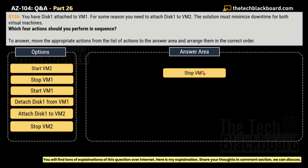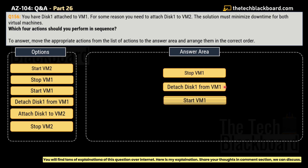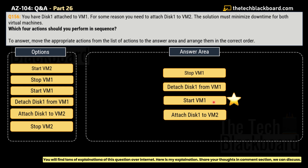The first correct step is: stop virtual machine 1. Assuming both VMs are running, we first stop virtual machine 1. Post that, we detach disk 1 from virtual machine 1. Once detached, we start virtual machine 1 — and I will explain why in a moment. The last step is attach disk 1 to virtual machine 2. So these are the four steps in the correct order to move disk 1 from virtual machine 1 to virtual machine 2.